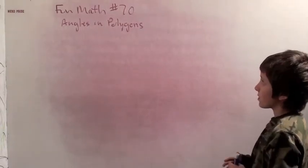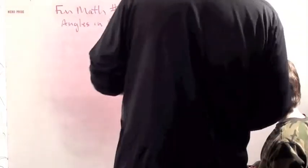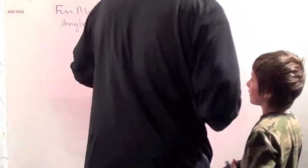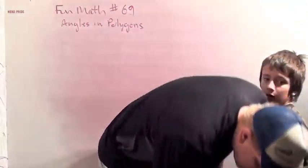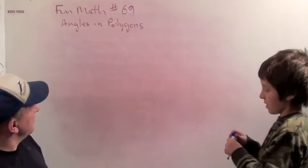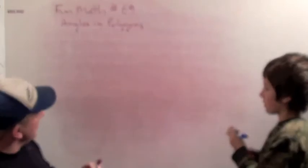Okay, good morning. Welcome to Fun Math Number 70, which is actually Fun Math Number 69. I forgot your brother is one video ahead of you because we had a glitch one day with the camera. So, angles and polygons.